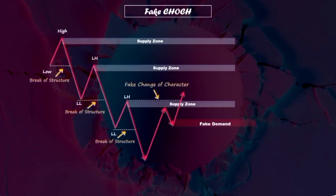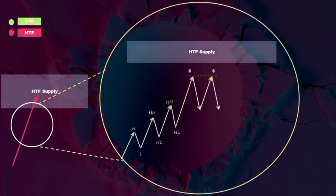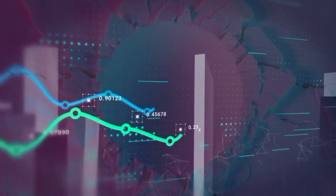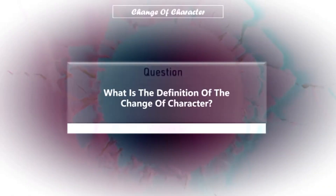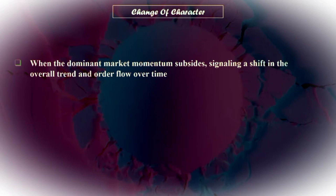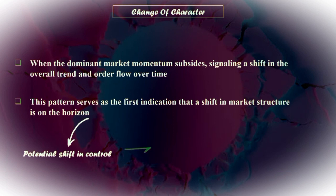In this advanced episode, we delve into various types of change of character trading strategies and associated price actions you might encounter in the market. We'll also break down the key criteria and rules that can turn a change of character into a high probability trade. A change of character occurs when the dominant market momentum subsides, signaling a shift in the overall trend and order flow over time. This pattern serves as the first indication that a shift in market structure is on the horizon, suggesting a potential shift in control from buyers to sellers or vice versa.